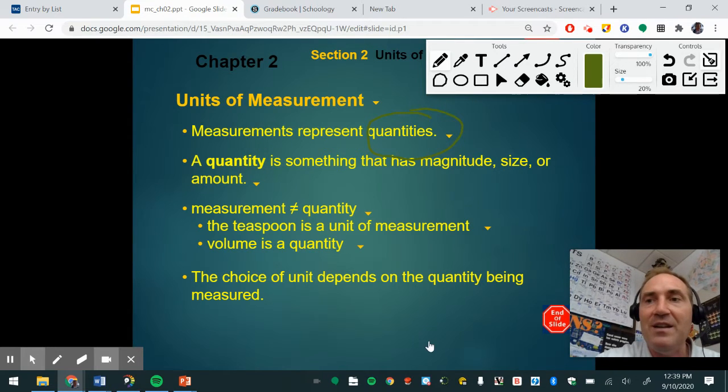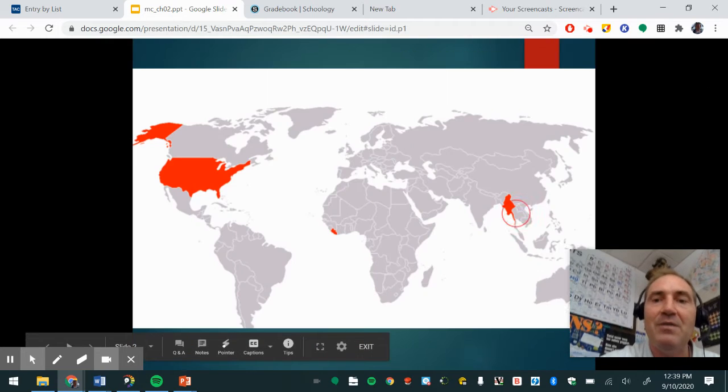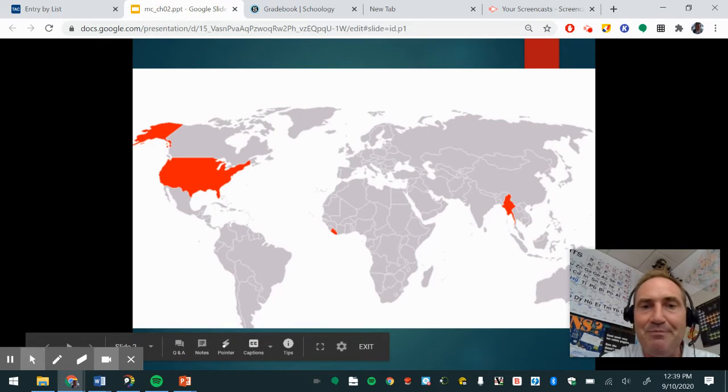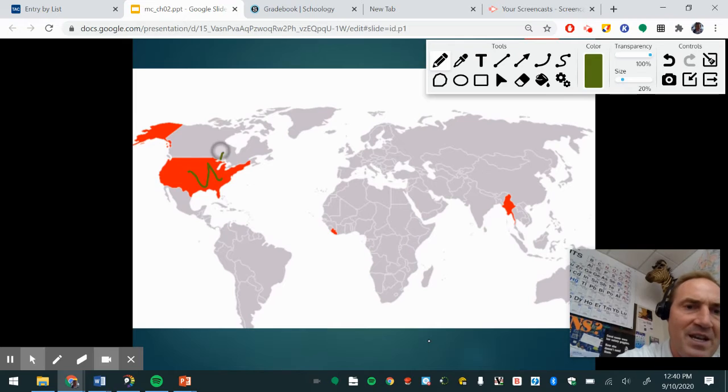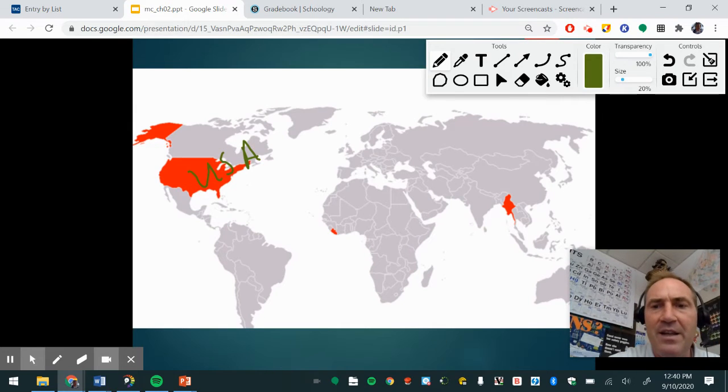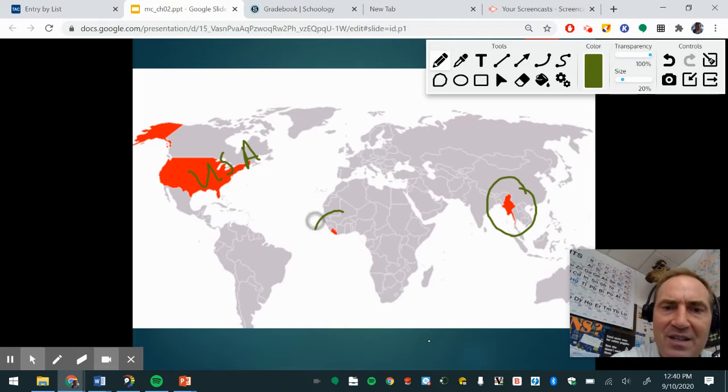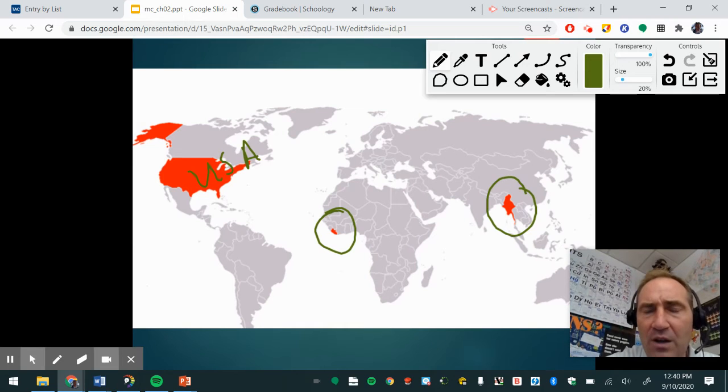Now, unfortunately, we cannot do that when we talk about chemistry, because of this picture. So you can see that the rest of the world is gray. And then there's three countries that are red. And one, this one right here is the USA. And then we have this country and this country. And all the rest of the world uses the metric system or the SI system and the US and these three other two countries do not. And I'm always surprised by this.